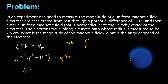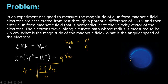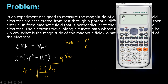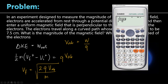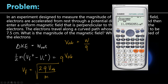Since initial velocity is zero, the final velocity squared equals 2Q times VAB divided by mass. Taking the square root: in the calculator, square root of (2 times electron charge constant 23 times 350 volts, divided by electron mass constant 03). The final velocity is 11.1 times 10 to the 6 meters per second.